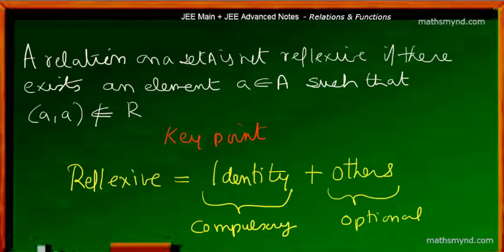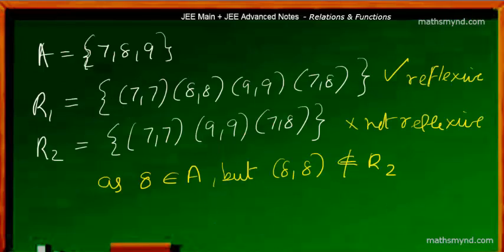Let's take a set consisting of elements 7, 8, and 9. We have a relation R1 which consists of four ordered pairs: (7,7), (8,8), (9,9), and (7,8). You can see that if we don't consider the fourth ordered pair (7,8), it is actually an identity relation. This case is reflexive because all elements of A are paired with themselves.